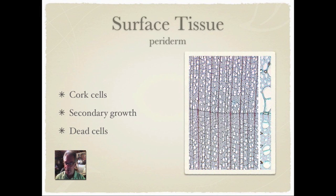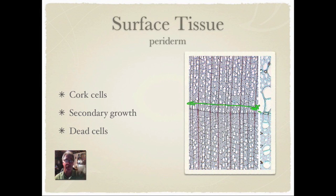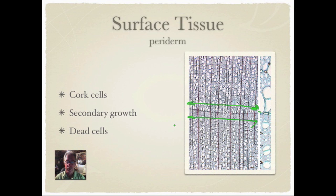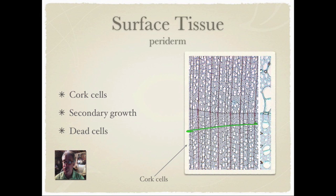The peridermis is a little bit different in that it's involved primarily in secondary tissue growth, whereas primary growth has to do with the epidermis. The peridermis is basically dead cells layering on top of each other to form bark. These dead cells are also forming cork cells on the outer portion of the plant. In trees, you can see this bark take form — the epidermis is inside, and the periderm, made out of cork cells or dead cells, forms outside of that.